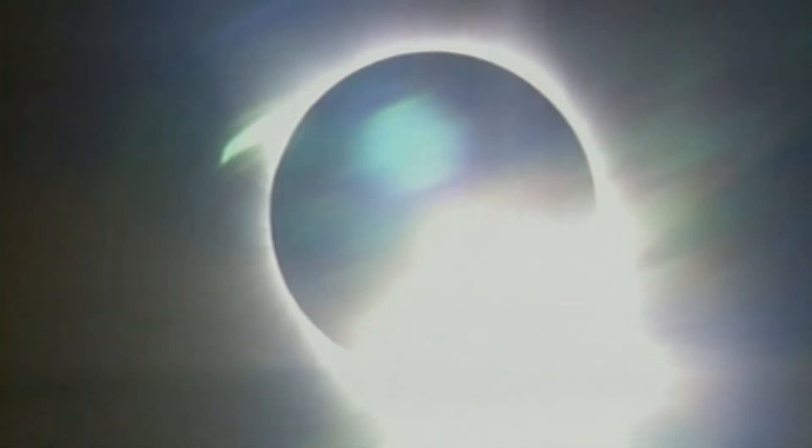When the moment of total alignment comes, known as totality, you will see a spectacular ring of light known as the corona, as intense energy in the Sun's atmosphere is the only bit that is unobscured by the Moon.